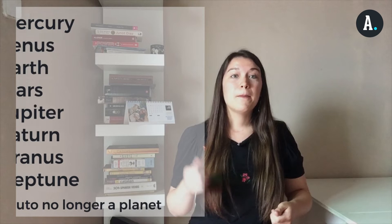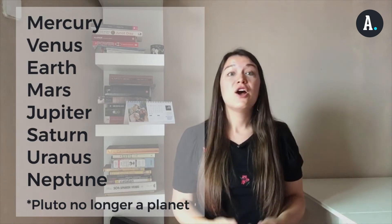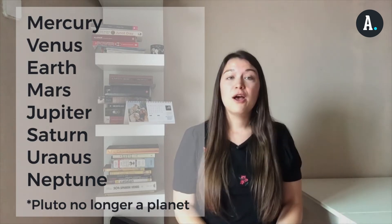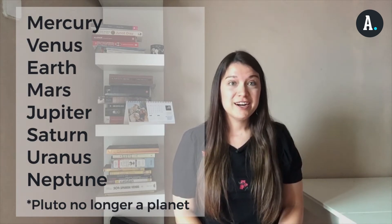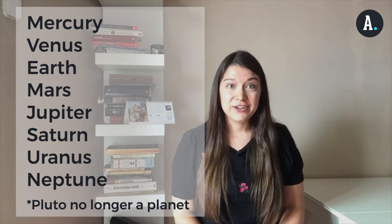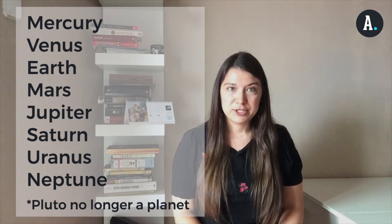Do you know the names of the planets in our solar system in English? They are Mercury, Venus, Earth, Mars, Jupiter, Saturn, Uranus, and Neptune.